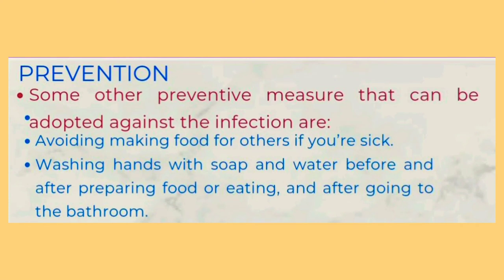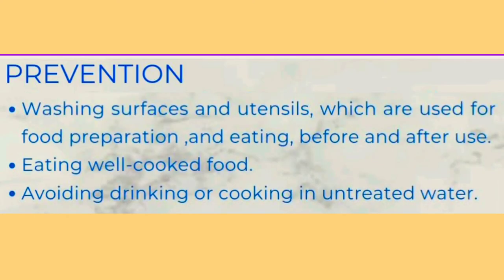Some other preventive measures that can be adopted against the infection are: avoiding making food for others if you're sick; washing hands with soap and water before and after preparing food or eating, and after using the toilet; washing surfaces and utensils which are used for food preparation and eating before and after use; eating well-cooked food; and avoiding drinking or cooking in untreated water.